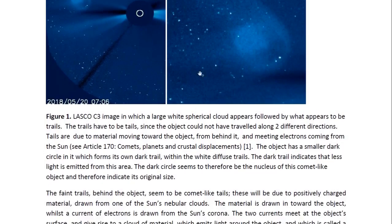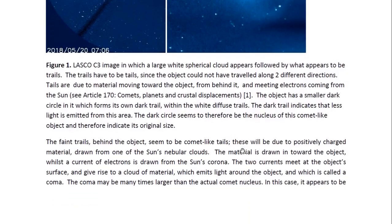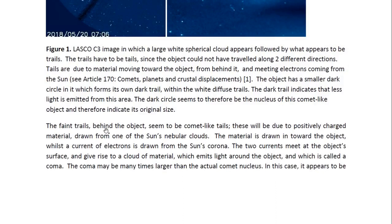The object also has what looks like a dark circle in it and seems to have a darker trail within the white tail. The circle will give us a good idea of the actual size of the object. The faint trails behind the object seem to be comet-like tails.